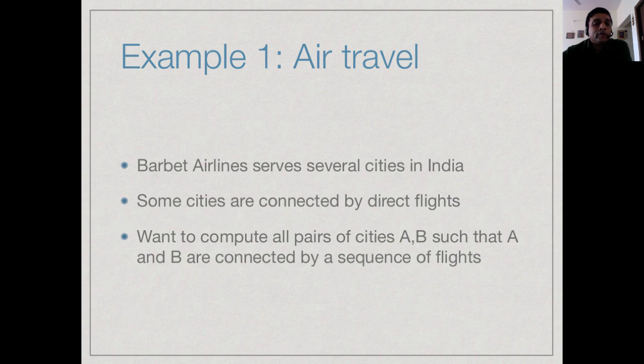For other pairs of cities, you have to take a hopping flight via an intermediate city. So our first goal may be to compute every pair of cities which are actually connected by this network served by this airline. How do we find all pairs of cities A, B such that A and B are connected by a sequence of flights?